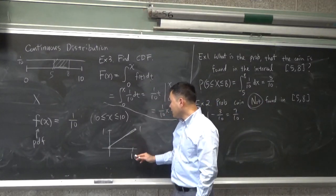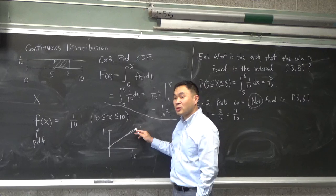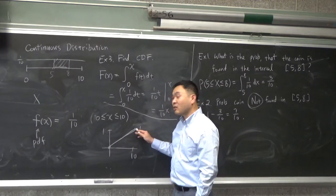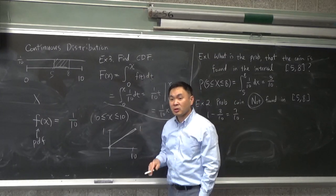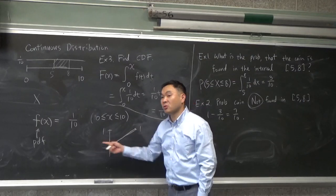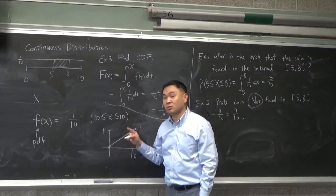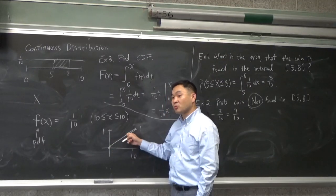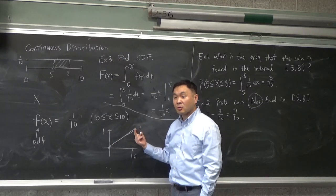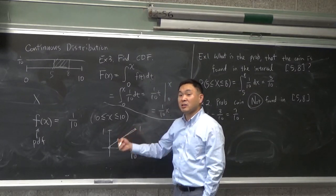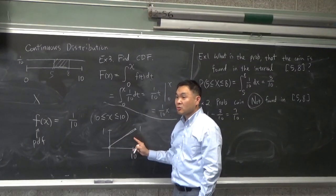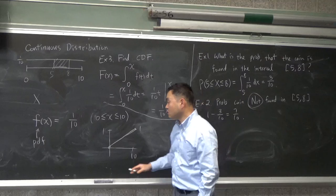And then, if x is 10, it should reach 1 because that accounts for all the possibilities. So, we know in general, what happens is that for a CDF, as you go closer to the left side, the value of the CDF should go close to 0. As you go close to the right side, the value of the CDF should go close to 1. And the graph of the CDF should always be increasing because the probability should be increasing as you move to the right.